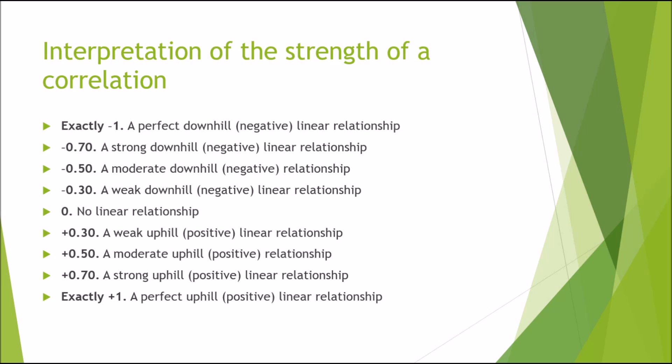As I mentioned briefly previously, a correlation range, regardless of the correlation, the maximum range is minus one to positive one. Exactly minus one is a perfect negative linear relationship. Negative 0.7 is a strong negative linear relationship. Negative 0.5 is a moderate negative relationship. Negative 0.3 is a weak negative linear relationship. And 0.0 means there's absolutely no correlation or relationship association between these two variables that you are investigating.